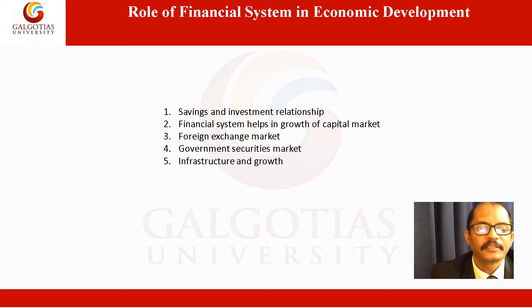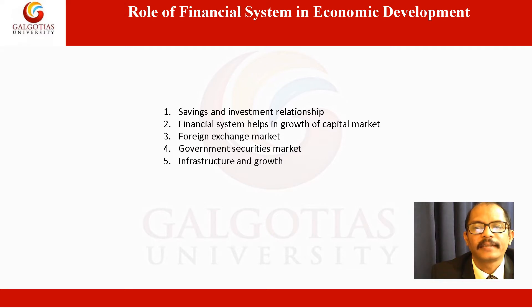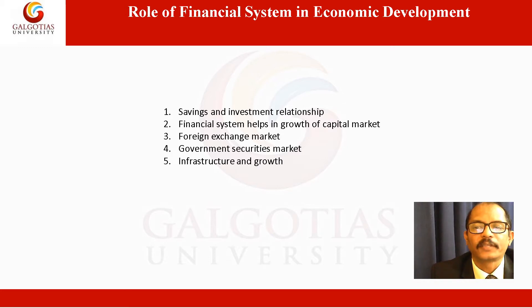Number one: the saving-investment relationship. To attain economic development, a country needs more investment and production. This can happen only when there is a facility for savings. Savings are channelized to productive resources in the form of investment. The role of financial institutions is important here, as they induce the public to save by offering attractive interest rates. These savings are then channelized by lending to various businesses involved in production and distribution.